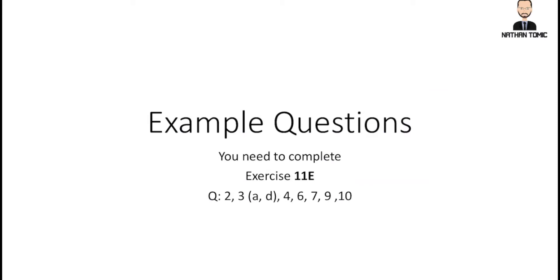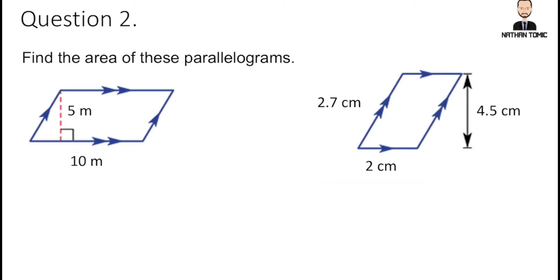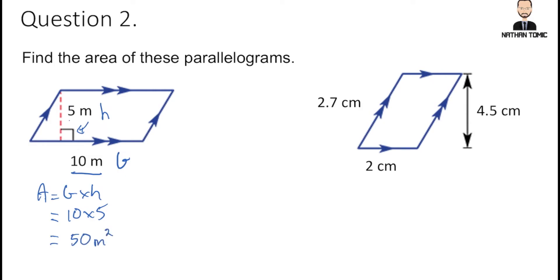Question 2 asks you to find the area of the parallelograms. The first example is straightforward — the measurements are provided. The 10 is our base and the 5 is our height, because it is perpendicular to the base. So: area = base × height = 10 × 5 = 50. Don't forget the unit of measurement — meters squared — indicating area.